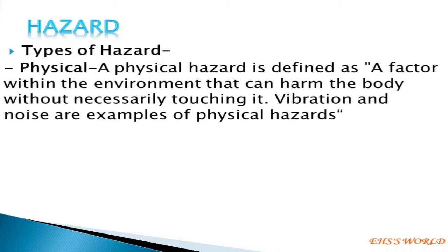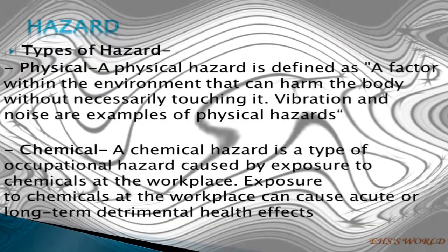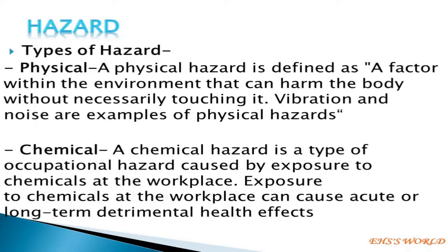A physical hazard is defined as a factor within the environment that can harm the body without necessarily touching it. Vibration and noise are examples of physical hazards. A chemical hazard is a type of occupational hazard caused by exposure to chemicals at the workplace. Exposure to chemicals at the workplace can cause acute or long-term detrimental health effects.